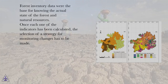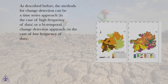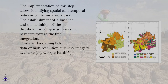Once each one of the indicators has been calculated, the selection of a strategy for monitoring changes has to be made. The methods for change detection can be a time series approach, in the case of high frequency of data, or a bitemporal change detection approach, in the case of low frequency of data. The implementation of this step allows identifying spatial and temporal patterns of the indicators used.